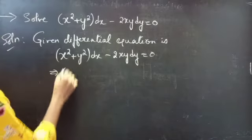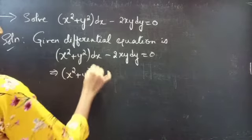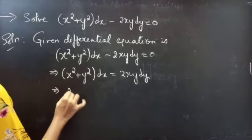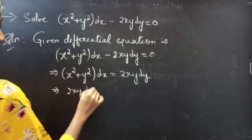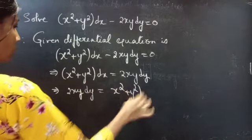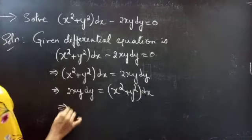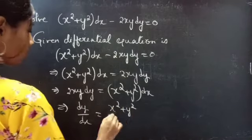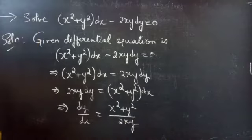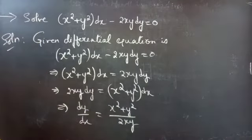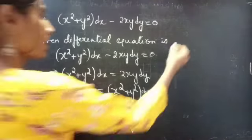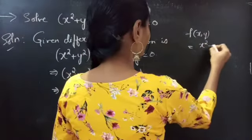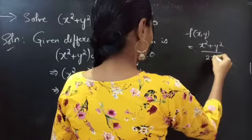We can write this as x squared plus y squared into dx equals to 2xy into dy. Again, 2xy into dy equals to x squared plus y squared into dx. From this, we get dy by dx equals to x squared plus y squared by 2xy. This is a function in x and y, so we have f(x, y) equals to x squared plus y squared by 2xy.